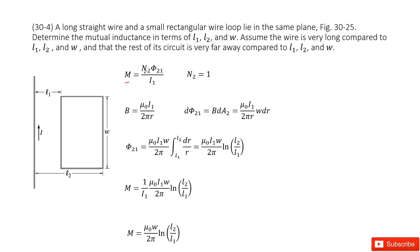It looks like there. This is N2 Φ21 over I1, right? And I1 is this one. N2 is how many turns for this loop. In this case, just one loop. So this is 1.